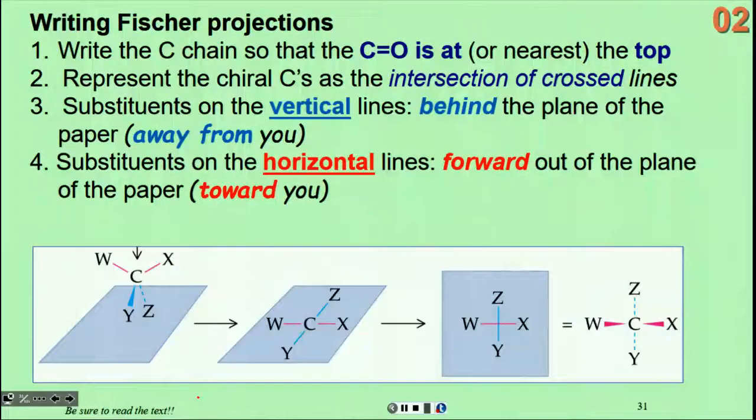When you're writing a Fischer projection, you write the carbon chain so that the carbonyl group is at or nearest the top. You put the chiral carbons as intersections of cross lines. The substituents on the vertical lines are going behind the plane of the paper, away from you, shown in blue here. The ones on the horizontal lines, shown in red, are coming forward out of the plane of the paper towards you. That's how we interpret those wedge bonds at the right.